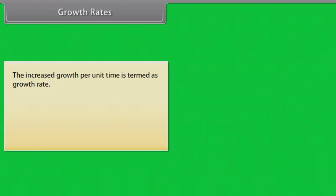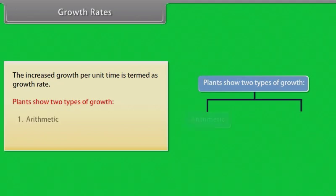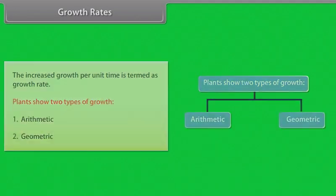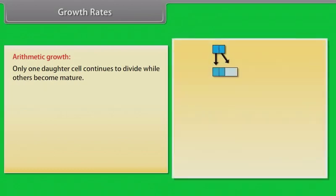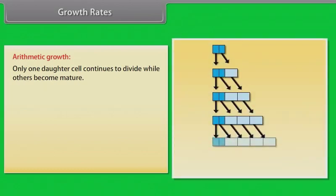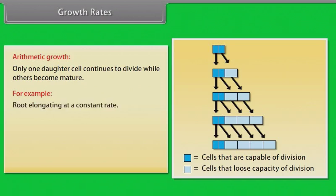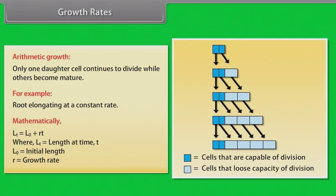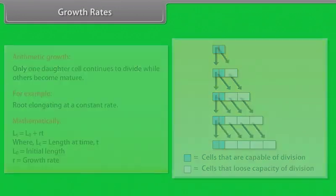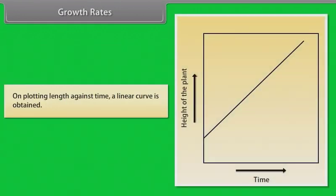Growth rates. The increased growth per unit time is termed as growth rate. Plants show two types of growth: arithmetic and geometric. Arithmetic growth - only one daughter cell continues to divide while others become mature. For example, root elongating at a constant rate. Mathematically, Lt equals L0 plus Rt, where Lt equals length at time t, L0 equals initial length, R equals growth rate. On plotting length against time, a linear curve is obtained.